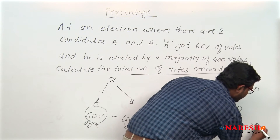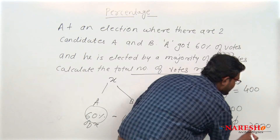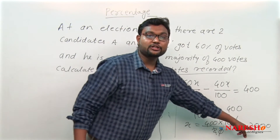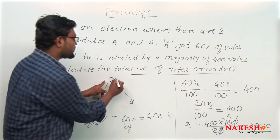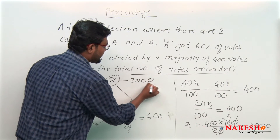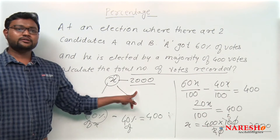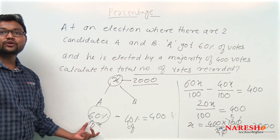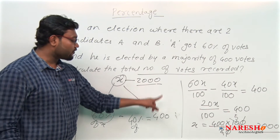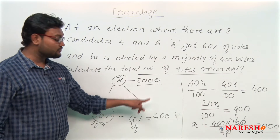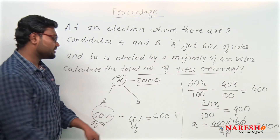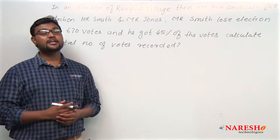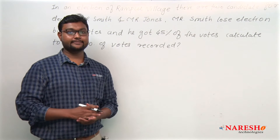After cancellation we get x equals 2000. So the total number of votes recorded is 2000. We can verify: 60 percent of 2000 is the votes A gets, and 40 percent of 2000 is the votes B gets. This is how we solve simple percentage questions. Now let us see the next question, which follows the same pattern.